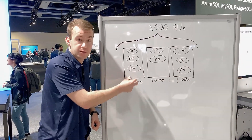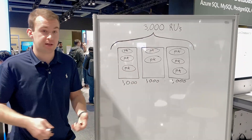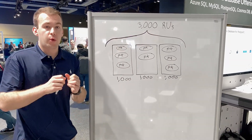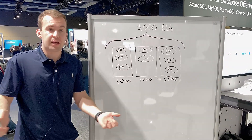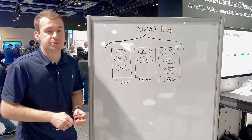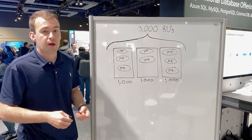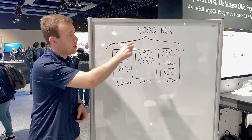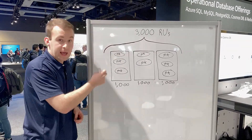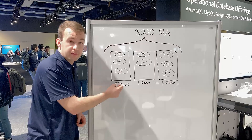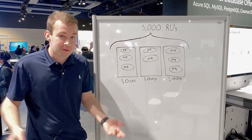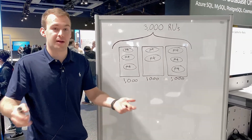Each physical partition is basically an individual piece of physical hardware in our data center. When you provision throughput on your container, we automatically take that amount of RUs and divide it up among all of the physical partitions. If you were to raise this number and go from 3,000 to 5,000, we would increase the amount of throughput assigned to each physical partition. This is all handled for you automatically by Cosmos DB.